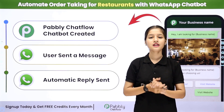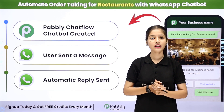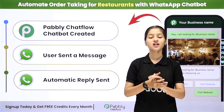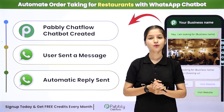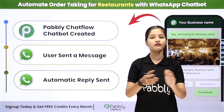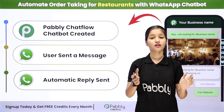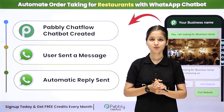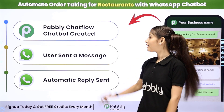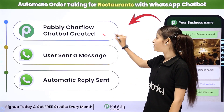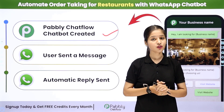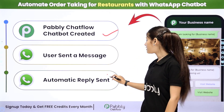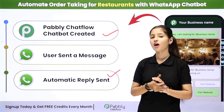For example, you have a restaurant and you want to take orders from many users at once. Responding to each and every user manually is time consuming and also a very hectic task. To get rid of this type of problem, we are going to create a WhatsApp chatbot with the help of Pabbly Chartflow, so that whenever your users send a message to your WhatsApp business account, your bot will respond to them automatically.